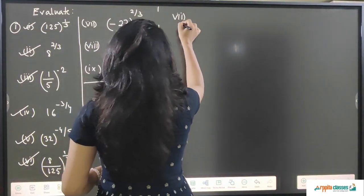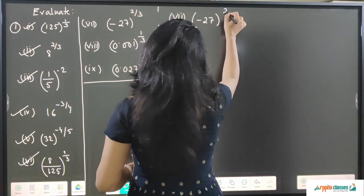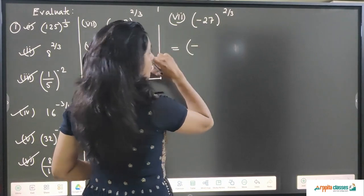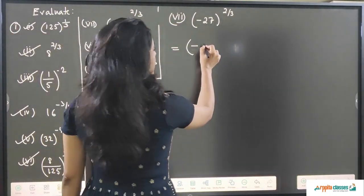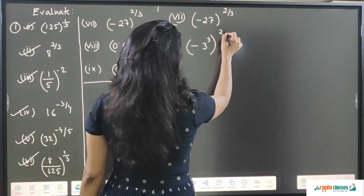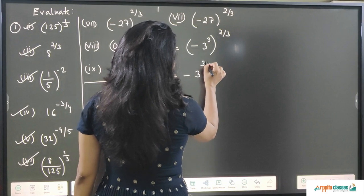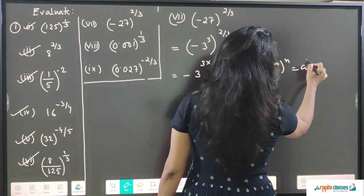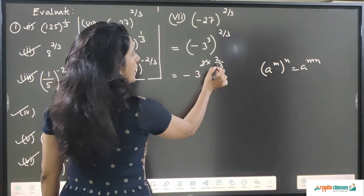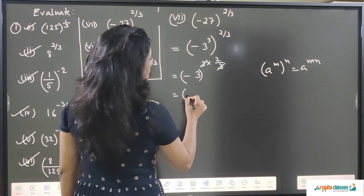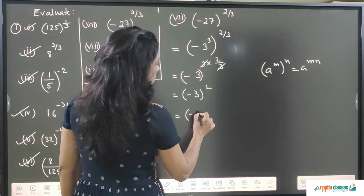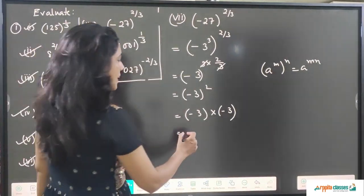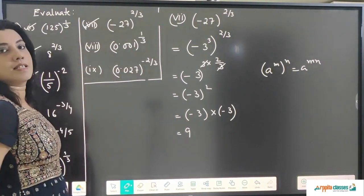Question 7 is minus 27 to the power 2/3. The base is negative so we keep the negative sign. Since 27 = 3³, we write (−3³) to the power 2/3. Using a to the power m whole to the power n equals a to the power m × n, this becomes (−3) to the power 3 × (2/3). The 3s cancel, giving (−3) to the power 2, which is (−3) × (−3). Minus times minus is plus, so 3 × 3 = 9. The answer is 9.